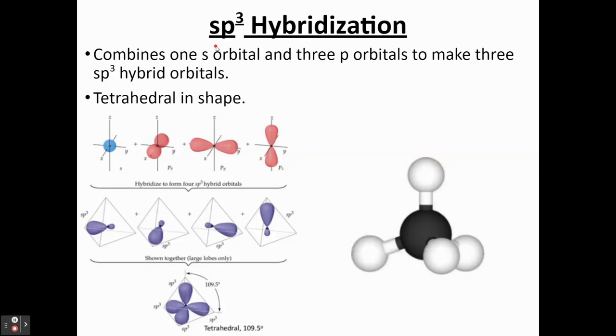Then we saw SP3 hybridization, where you have one S and three P's. And when they combine, they form four SP3 orbitals. When you put them together here, they form that 109.5-degree bond angle characteristic of the tetrahedral.